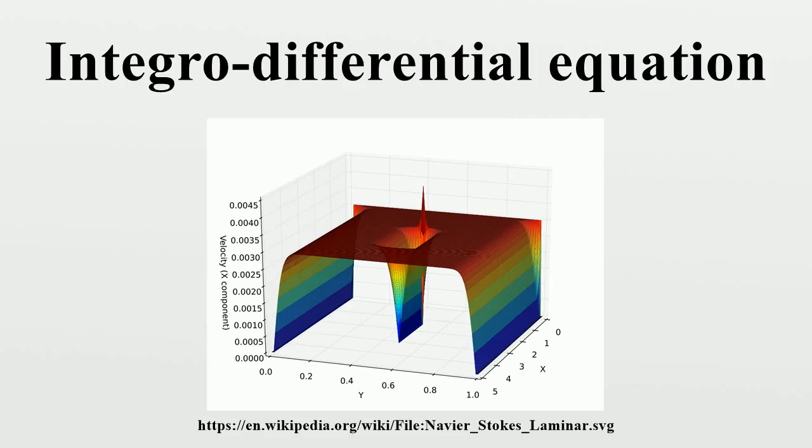The activity of interacting inhibitory and excitatory neurons can be described by a system of integro-differential equations. See for example the Wilson-Cowan model.